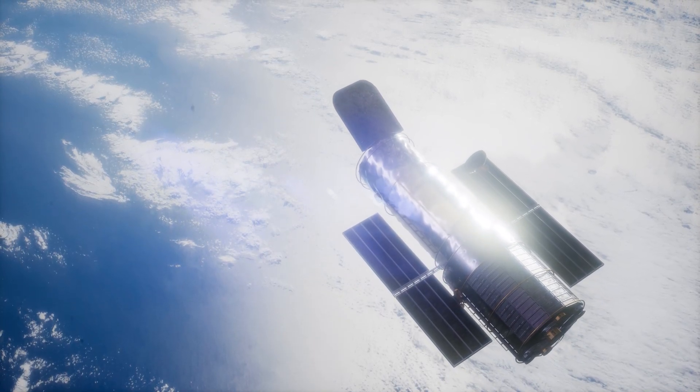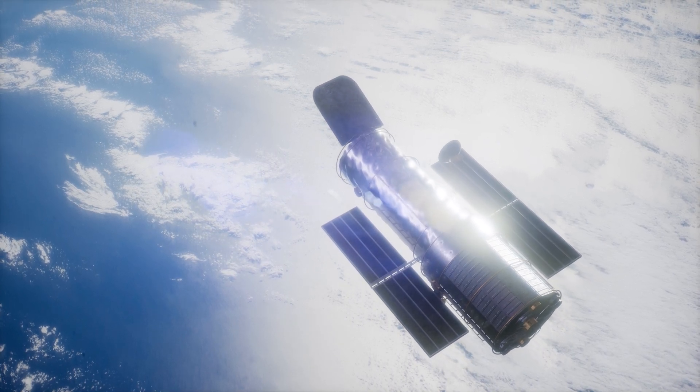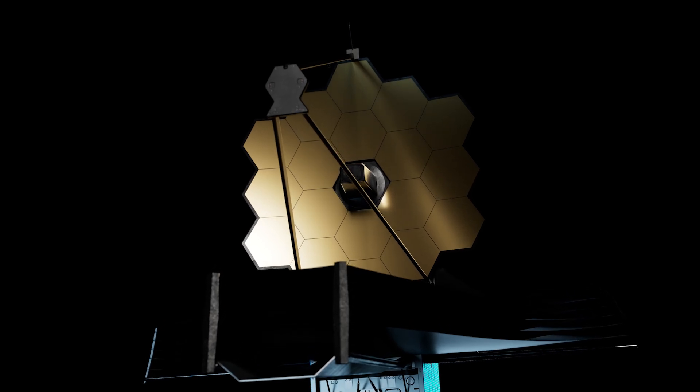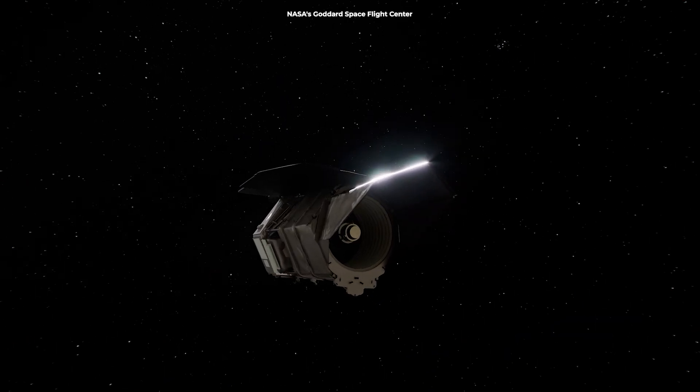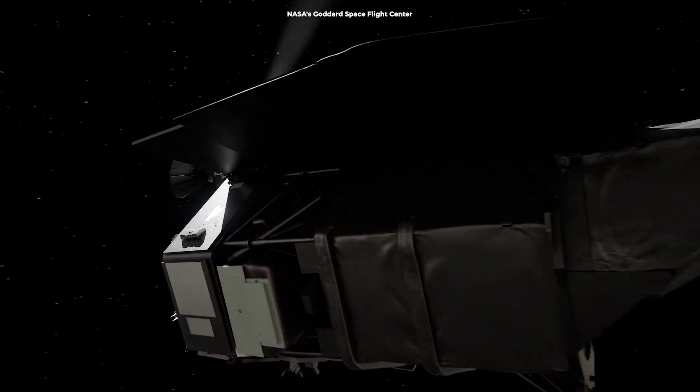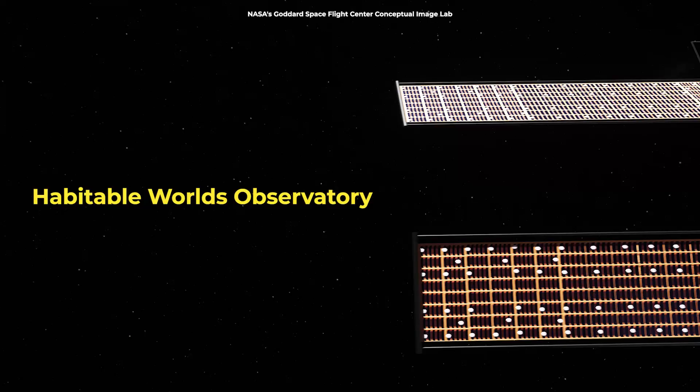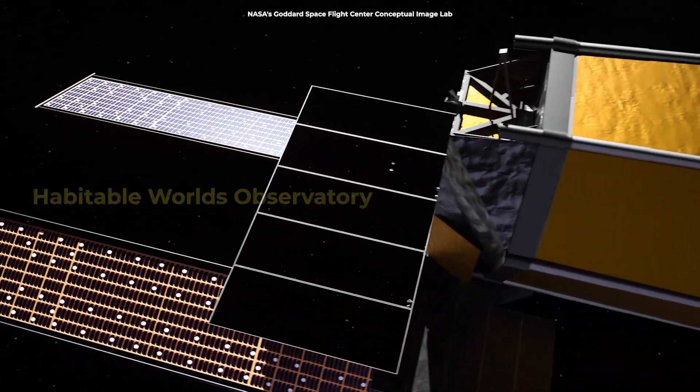For decades, telescopes like Hubble have transformed our understanding of the universe. The James Webb has shown us the most distant galaxies ever seen. And soon, the Roman Space Telescope will map the cosmos like never before. But the Habitable Worlds Observatory, this is something different entirely.